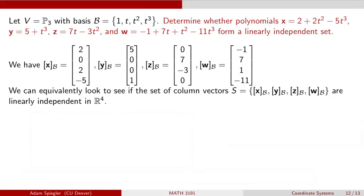And the same goes if we find that these four column vectors are linearly dependent. That would tell us that these four polynomials would also form a linearly dependent set. And so there are different ways that we've discussed taking a set of four different column vectors and determining whether they would be linearly independent.